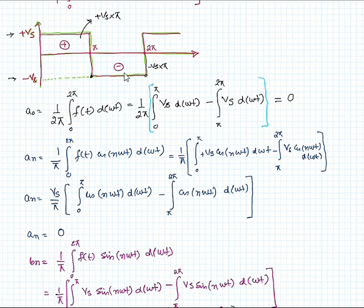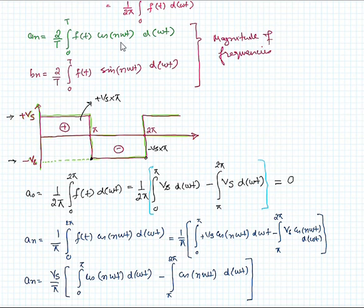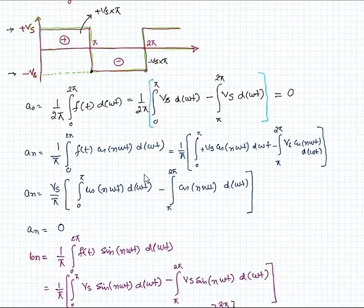Then calculating the an according to this expression, an is 2 by π, the integration of the signal multiplication with cosine of n omega t over the time period. If we evaluate an, that also comes out to be 0.